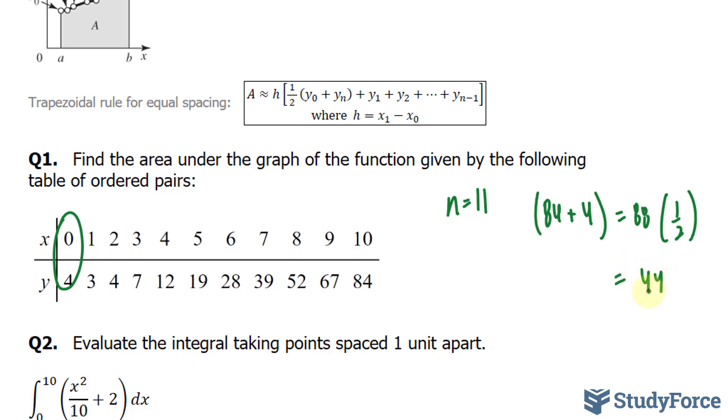Next, we have to add up all the y outputs from y1 all the way to y subscript n minus 1, so the second last observation that we found. So I'll be adding 3 all the way to 67.